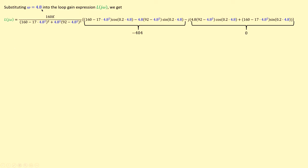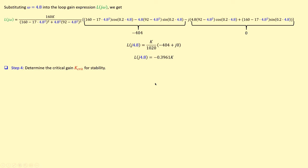It is no surprise that the imaginary part is zero. Working out the expression, we have 160K divided by the denominator value, which gives K/1020, and the result is (−404 + j·0). Simplifying further, the loop transfer function at the critical frequency of 4.8 rad/s equals −0.3961 × K.